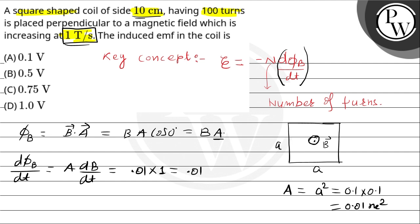So it is 0.01 into dB by dt equals 1. So it is equal to 0.01 tesla per second meter squared. Now put these all values. Number of turns is given here.